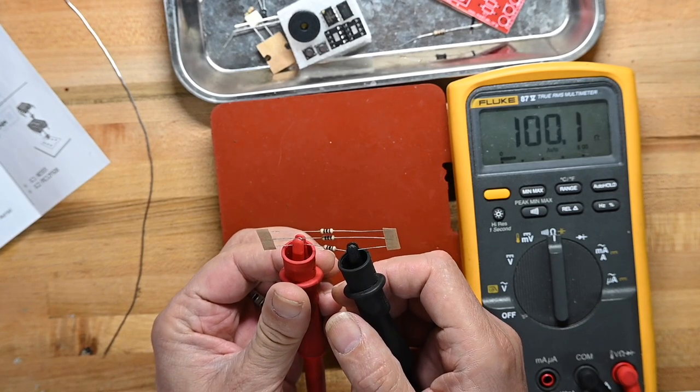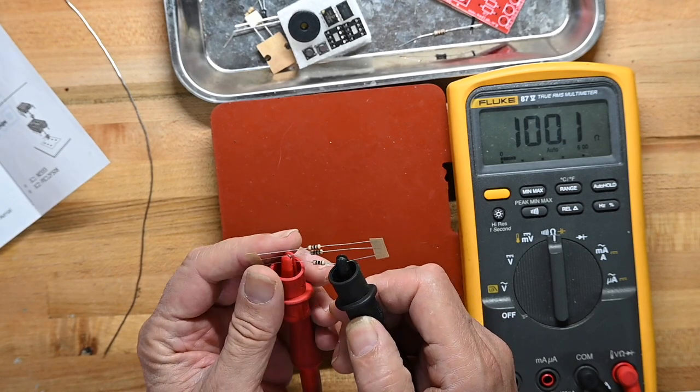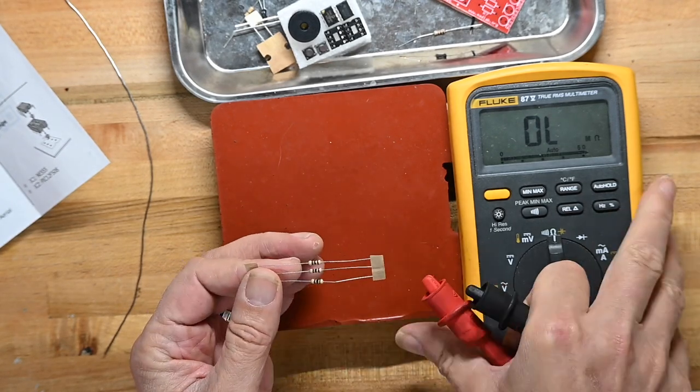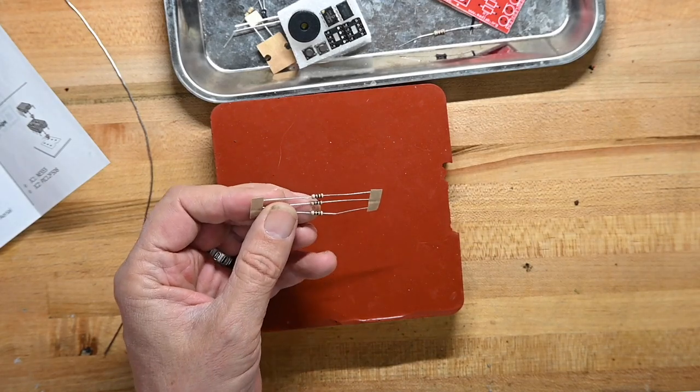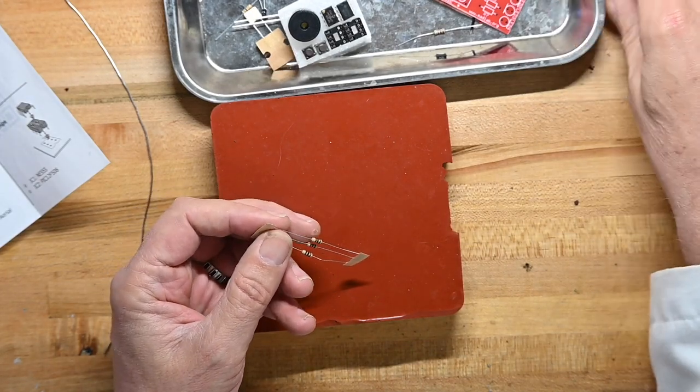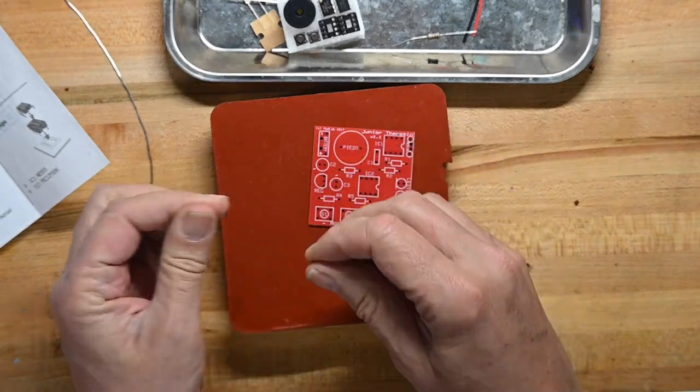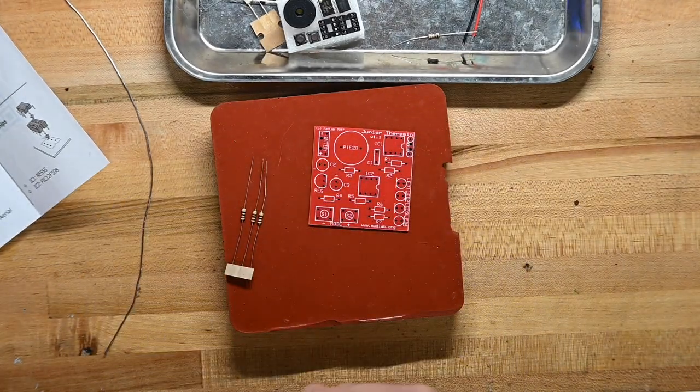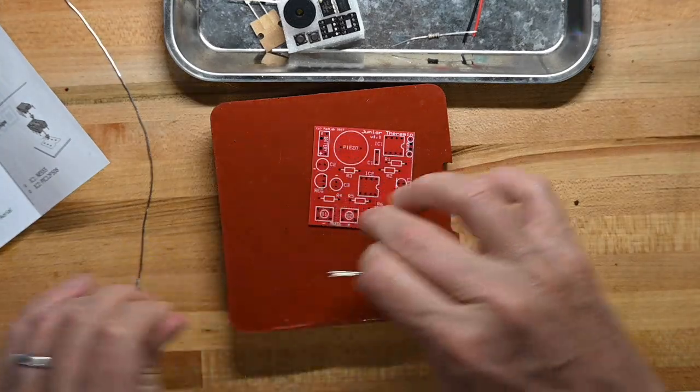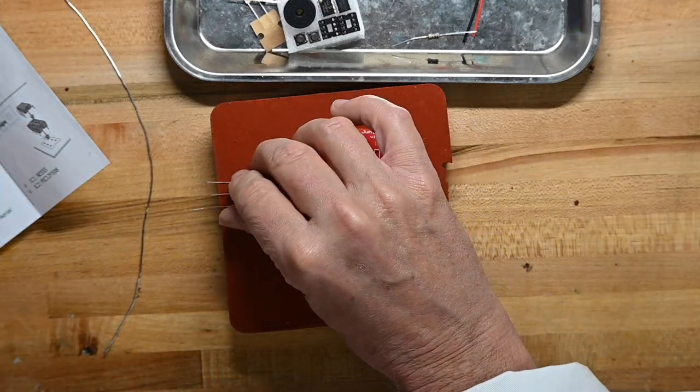98.2, so that's 1.8 ohm below advertised, which is 1%, which is not bad. I mean, I can do that math because it's 100. That's almost dead on. These are pretty good resistors. That's nice. And these 100 ohms go R3, R6, and R7.